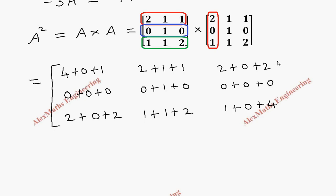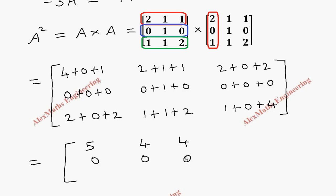So we got A squared. Simplifying: the first element is 5, then 4, 4; second row is 0, 1, 0; third row 4, 4, 5. We got A squared completely. Note: the middle diagonal element is 1.